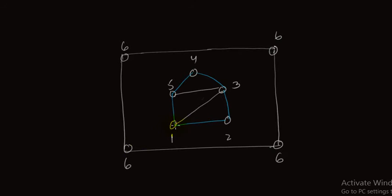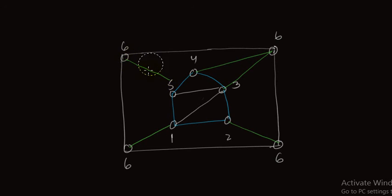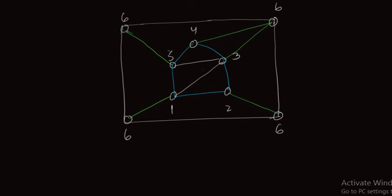Now we join vertex 6 to all other vertices: 6 with 1, then 6 with 2, 6 and 3, 4 and 6, and 5 and 6. So vertex 6 is now connected to all other vertices.